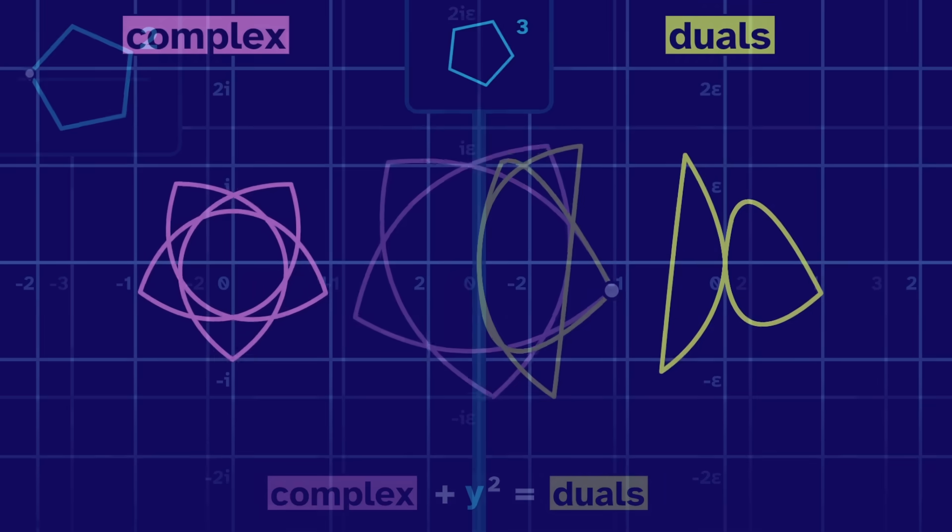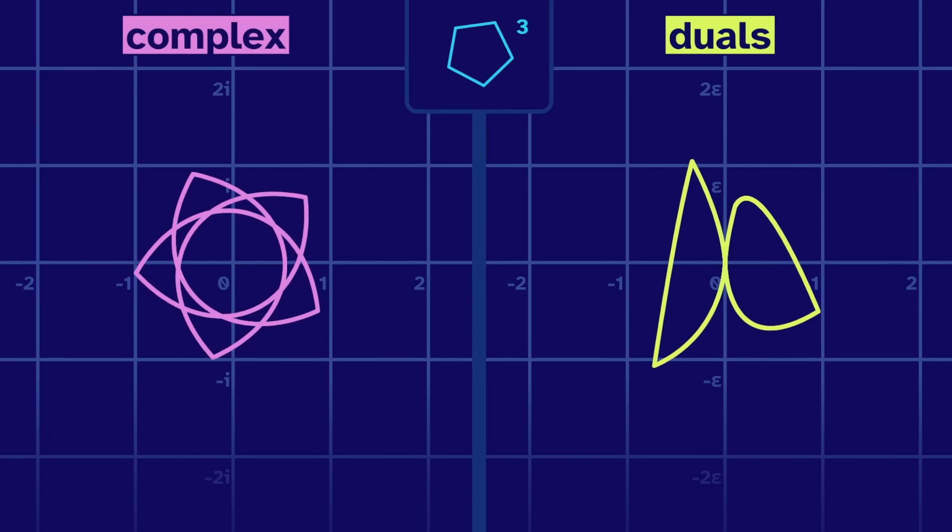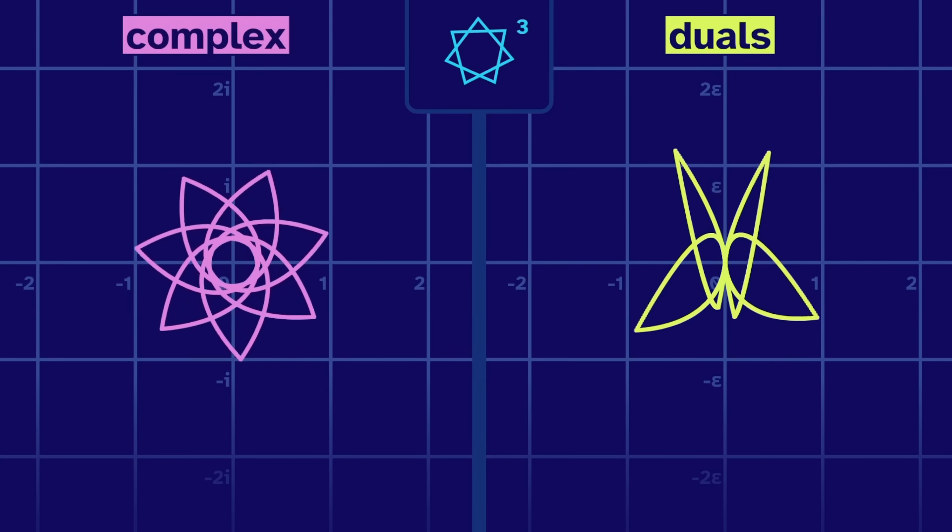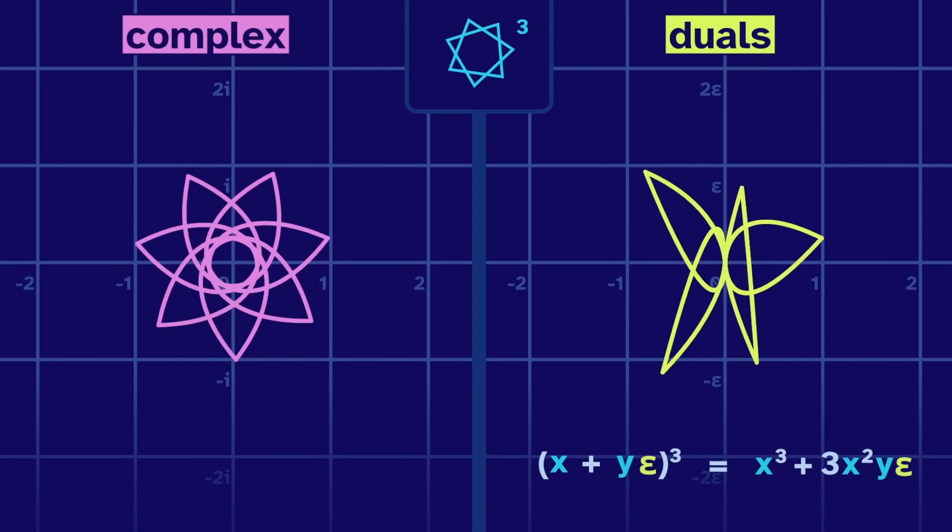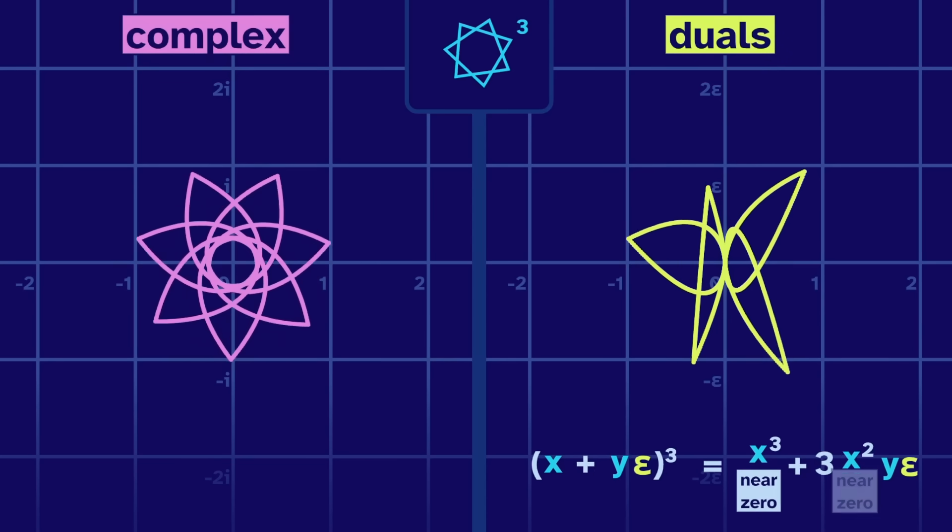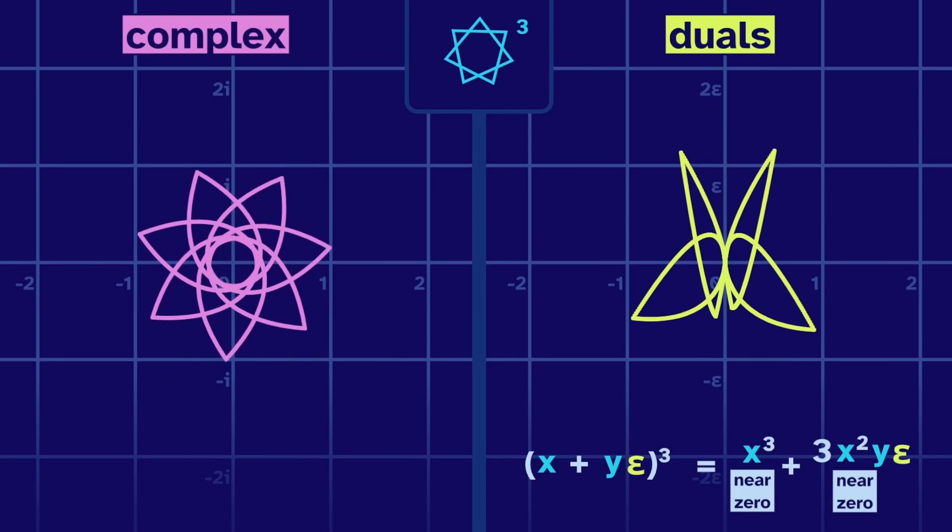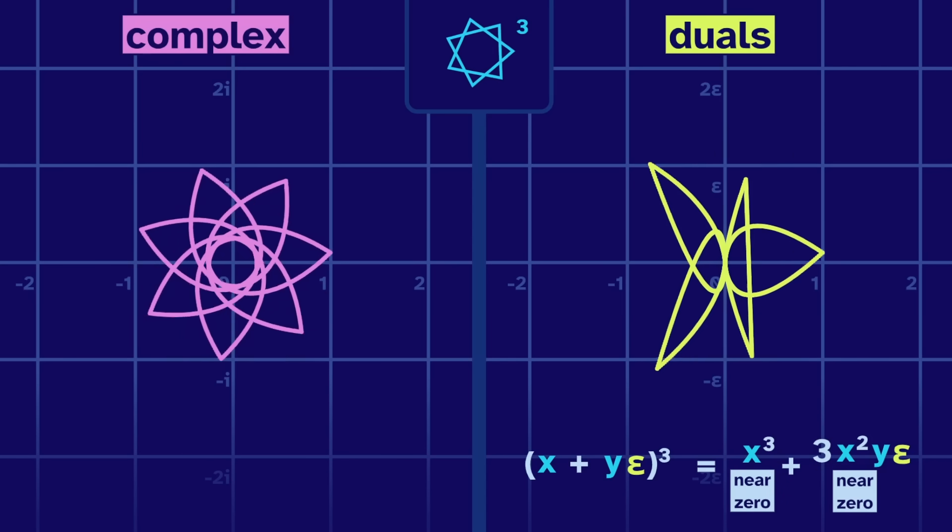Now, what if we cube a shape? The dual output is in both hemispheres, but it's pinched in the middle. This happens with any shape cubed. If the output is near the meridian, that means the real part, x cubed, is near zero. But then, x squared is also near zero, so the entire epsilon coefficient is near zero. Being near the meridian pulls us into the equator, unless the y value is large.